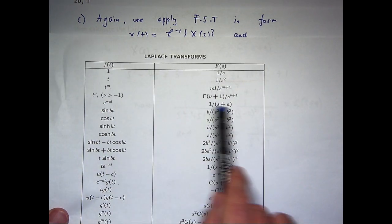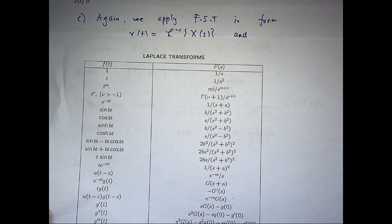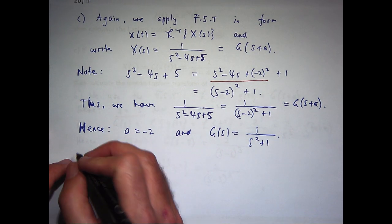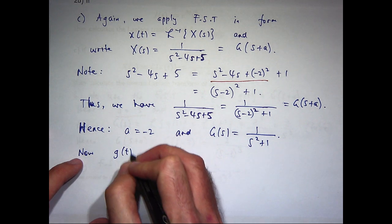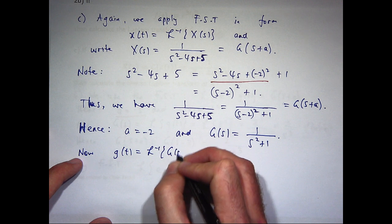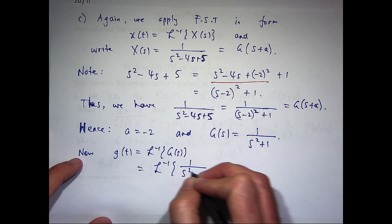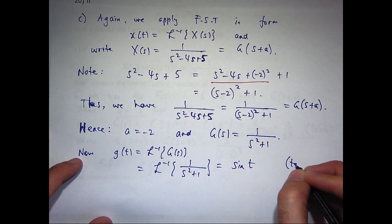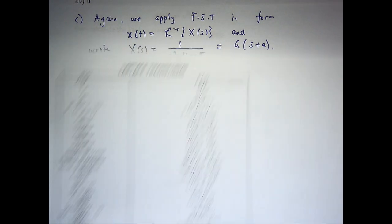So, let's find the inverse transform of this. It's going to be this case with b equals 1. So, the inverse transform is just sine of 1t, sine of t.